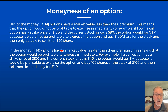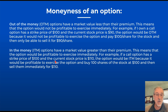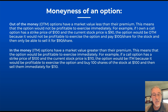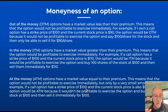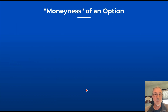If I flip that: an in the money option has a market value greater than the premium, meaning it would be profitable to exercise immediately. For example, if a call option has a strike price of $100 and the stock is at $110, it would be profitable — buying 100 shares at $100 and selling them for $110. An at the money option is simply when the stock and the strike are both at $100; there is no intrinsic value built into that option.